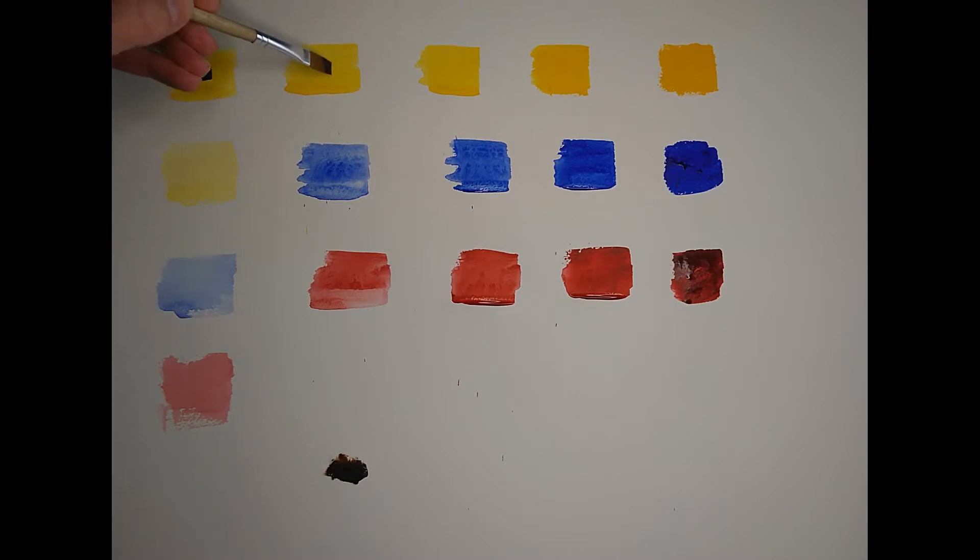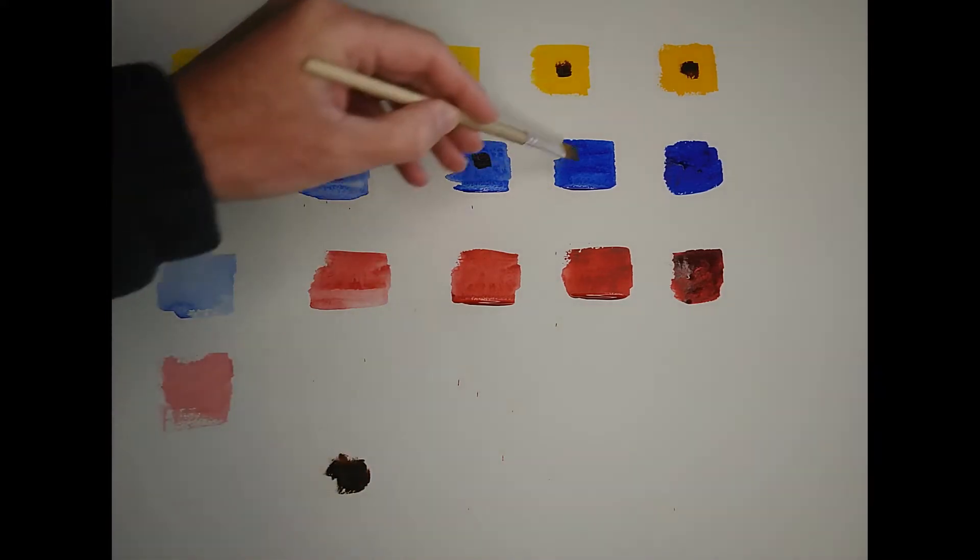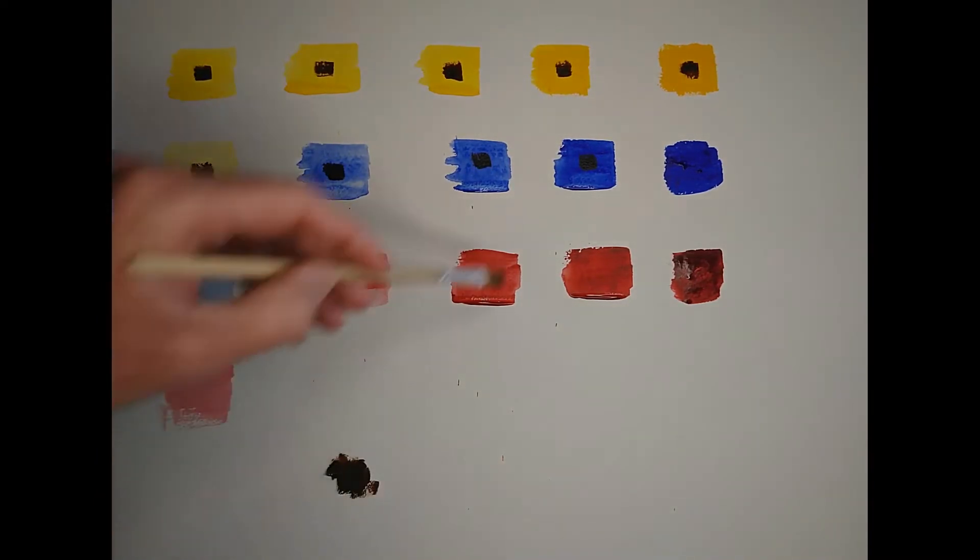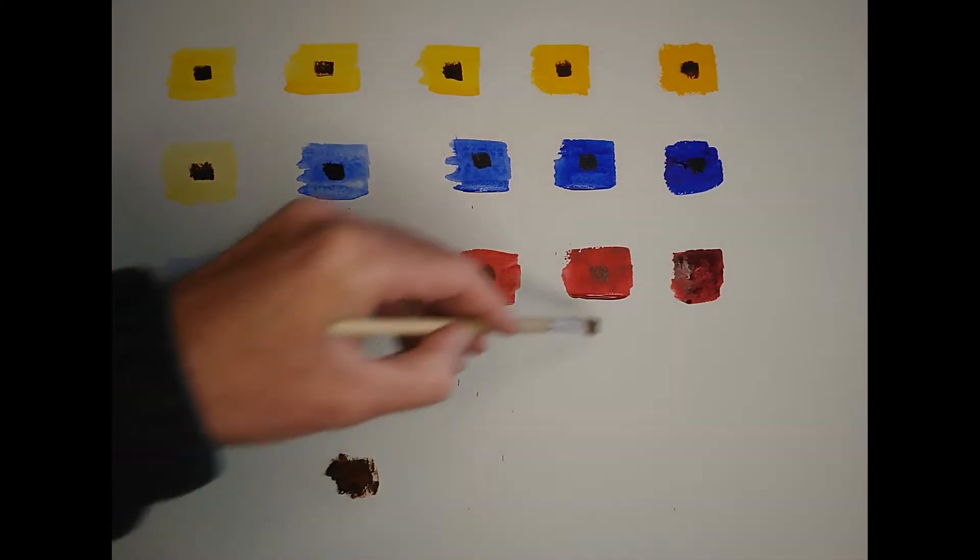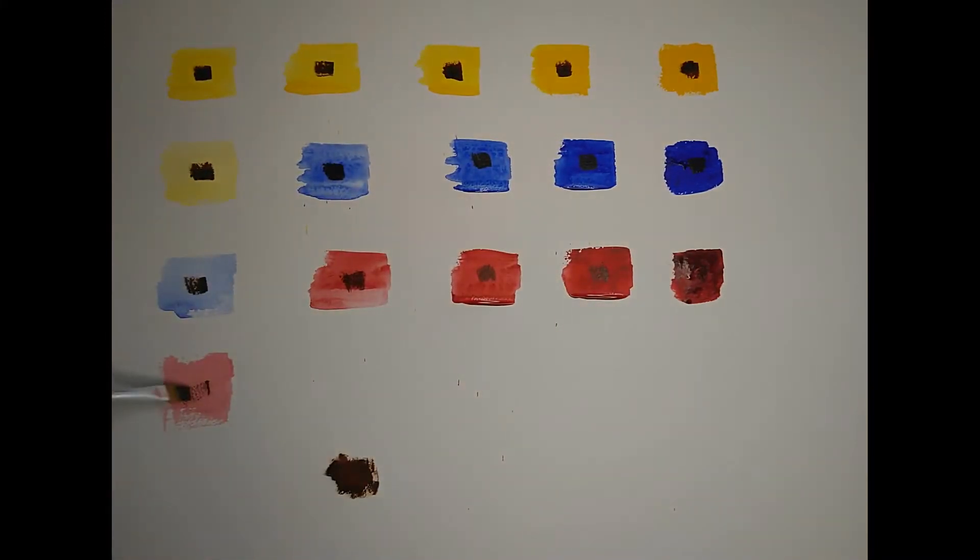And what I can do now again is just get just the tiniest bit of water. And I can take this color. And I can just put a little patch of it on top of each of the now dry patches of color that I've put down. And in doing this, that's going to allow me to see how the brown looks against the different tones I've got for each of the primary colors that I've used.